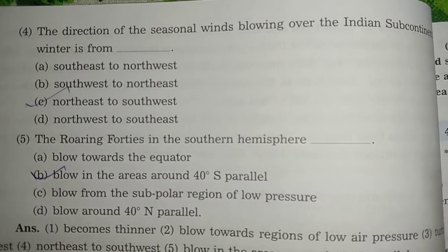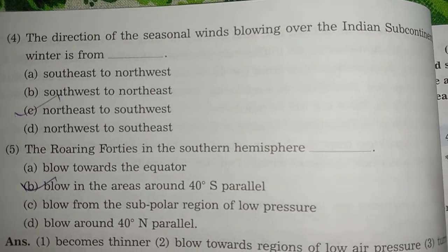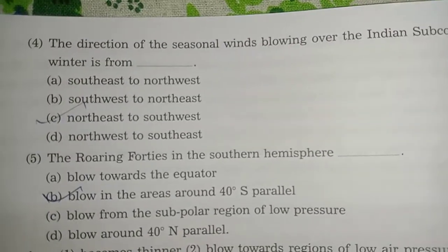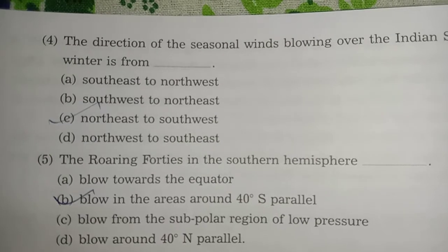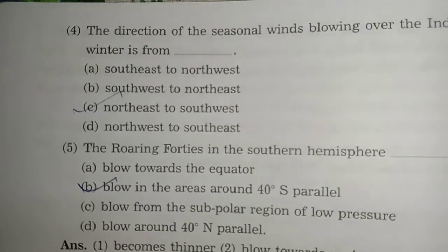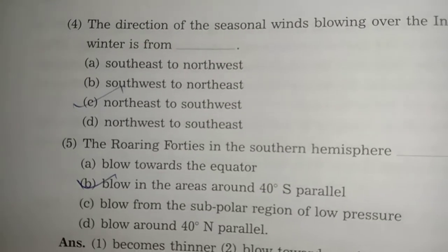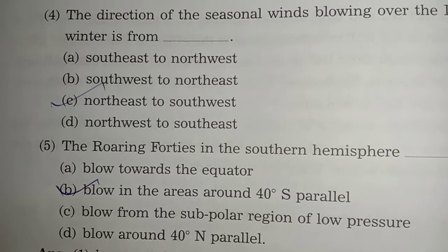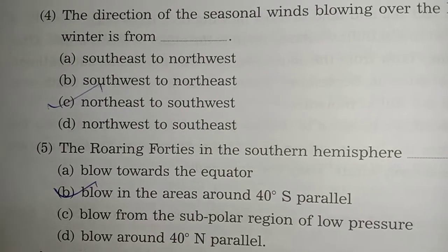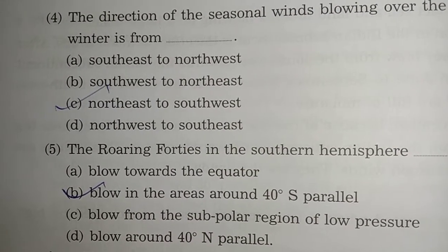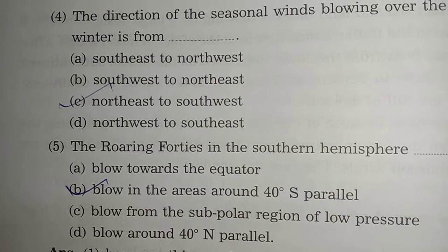Question 4: The direction of a seasonal wind blowing over the Indian subcontinent in winter is — options: south west to north east, north east to south west, south east to north west, north west to south west. The answer is option C: north east to south west.